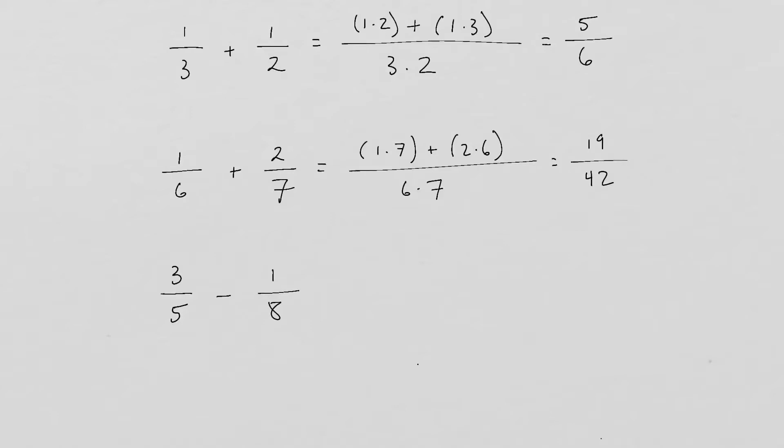Okay, now what if we have subtraction? So 3/5 minus 1/8. What we're going to do is do the same thing. We're just going to multiply 3 times 8. But instead of adding like we did up here, we're just going to subtract 1 times 5.